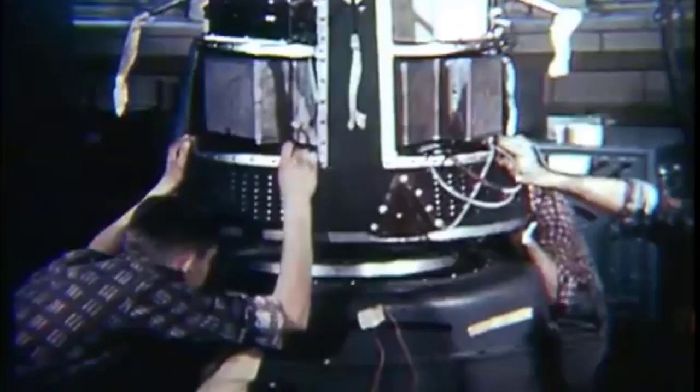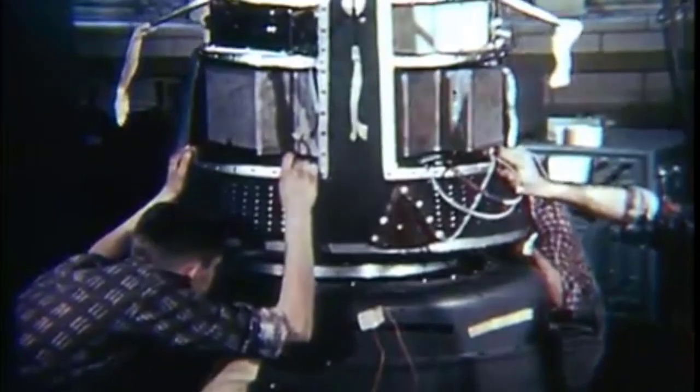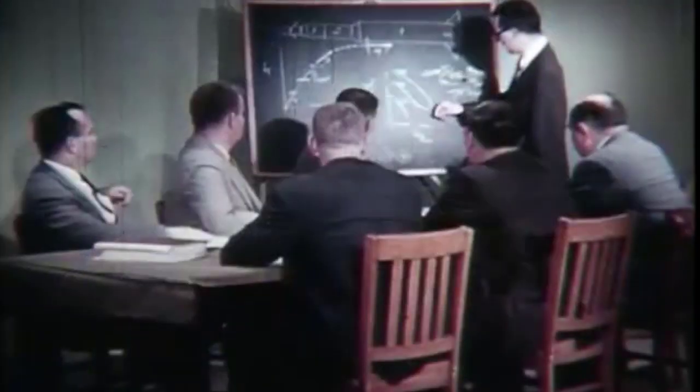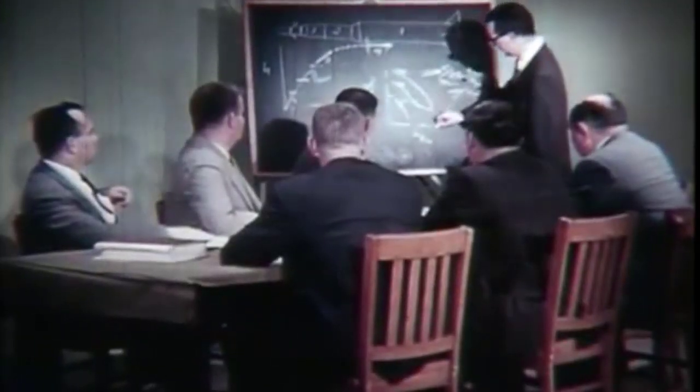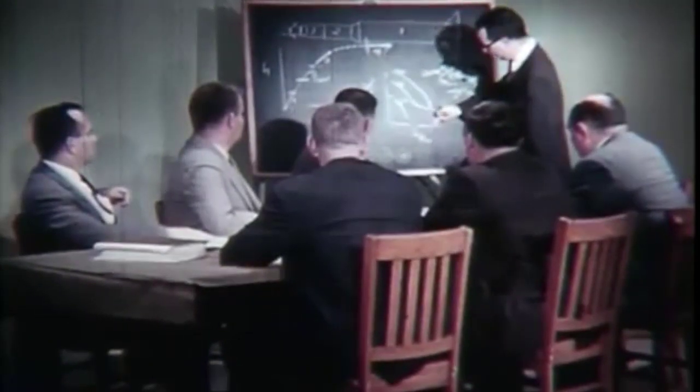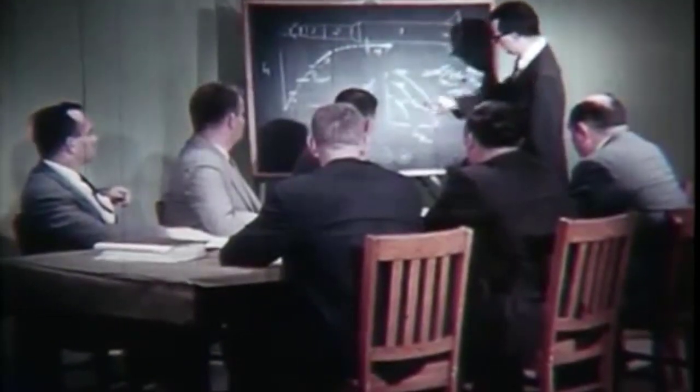The first stage of launching a satellite into space is designing and building the satellite. This stage involves developing a concept, creating a design, and building a prototype. Engineers use advanced computer software and simulations to test and refine the design, ensuring that the satellite will function as intended.